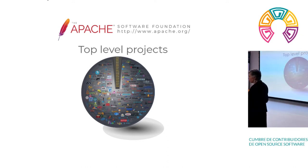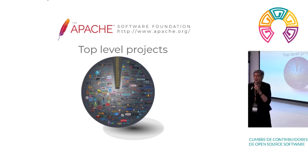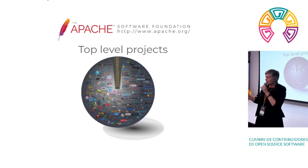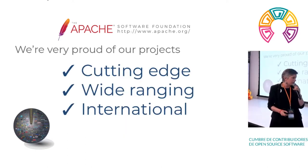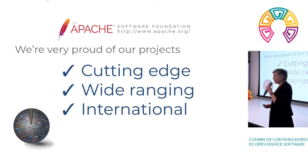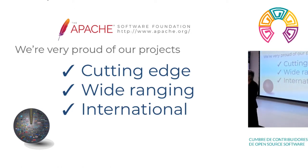Top-level projects are the 203 PMCs, or 350 projects managed by the PMCs, that the Apache Software Foundation provides the umbrella organization for. We're very proud of our projects — we are cutting edge, we're the best of the best.